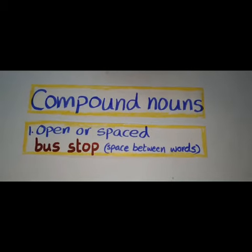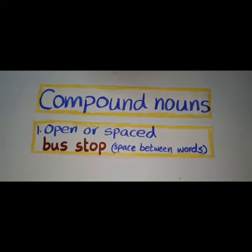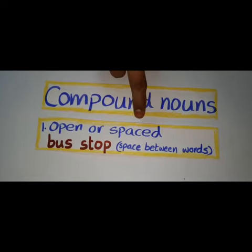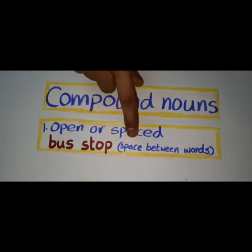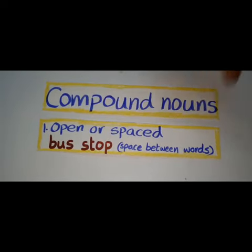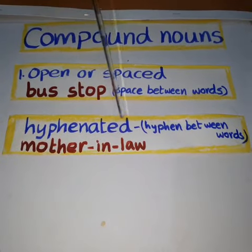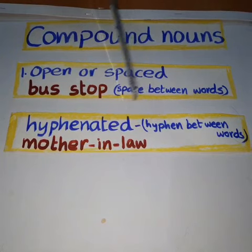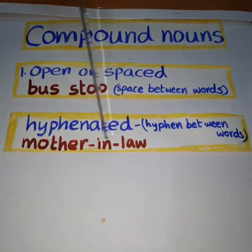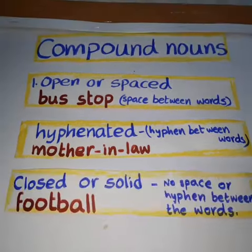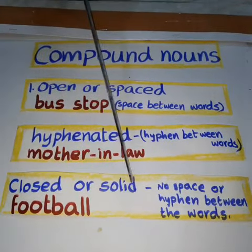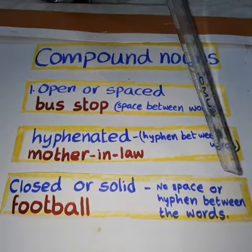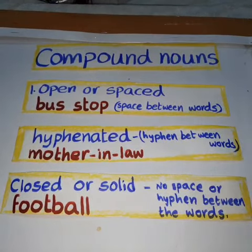Compound nouns can be formed in three ways. First, open or spaced: 'bus stop' — space between words. Second, hyphenated: hyphen between words, for example 'mother-in-law'. Third, closed or solid: 'football' — no space or hyphen between the words.